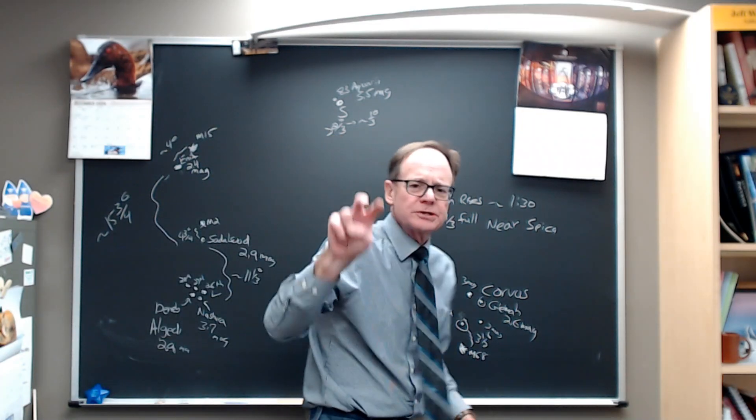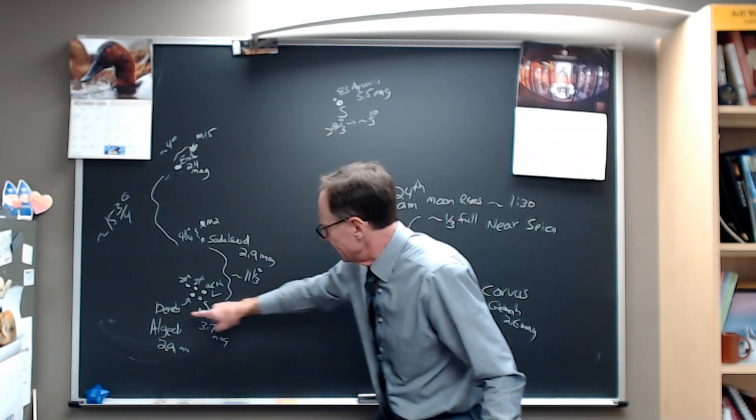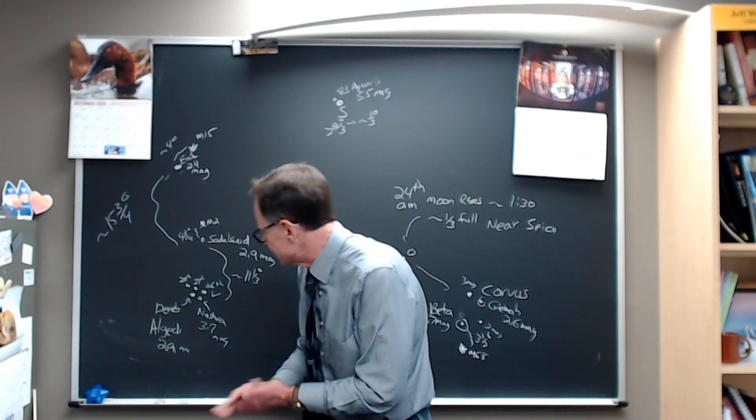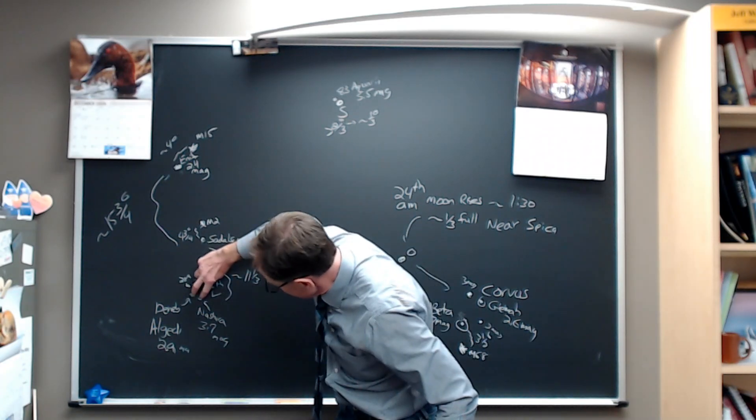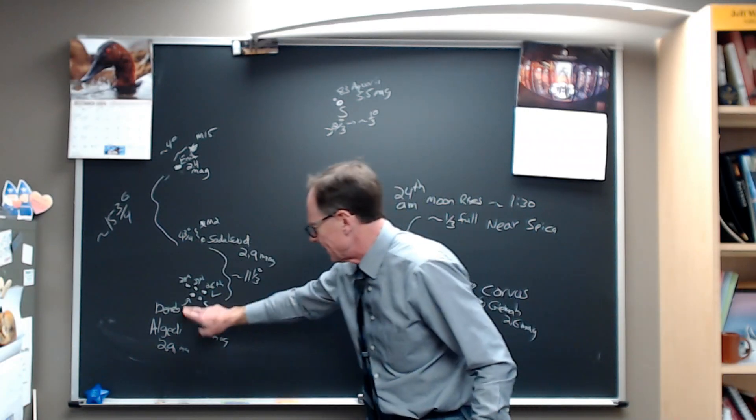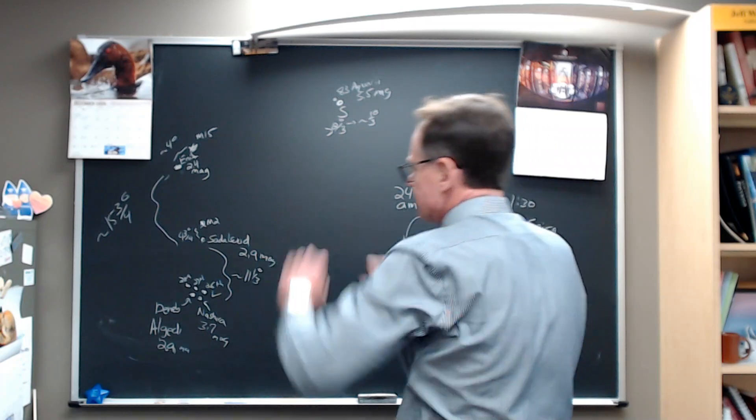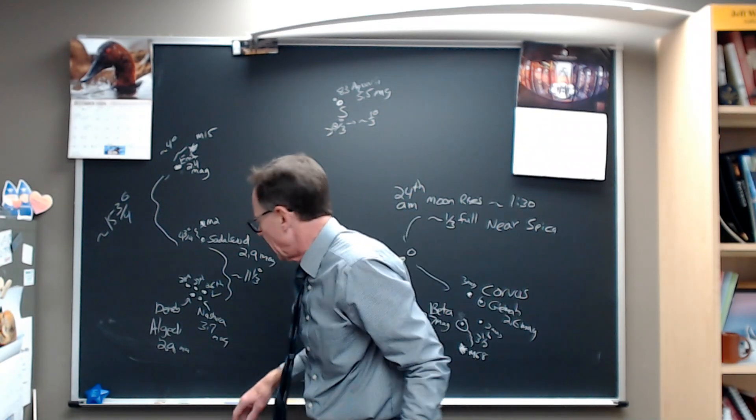And these two stars in the back of Capricornus, Nashera and Deneb Algedi, tail of the goat, look like a little fang bite, look like a little snake bite. Deneb Algedi is the brighter, the eastern most of the two stars, 2.9 magnitude, a pretty good bright star for us to see.